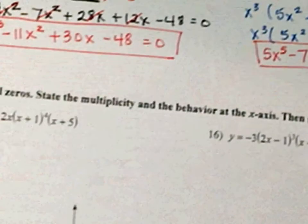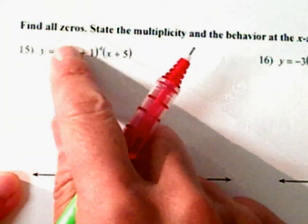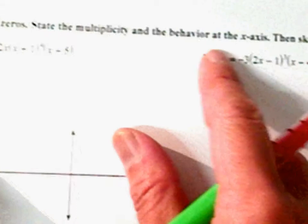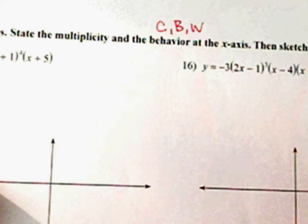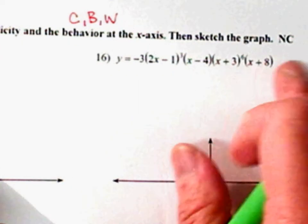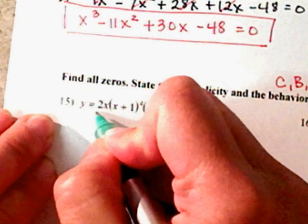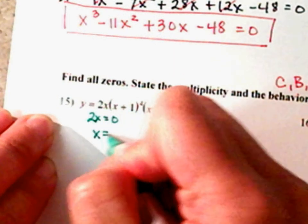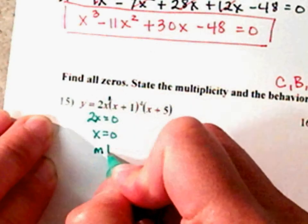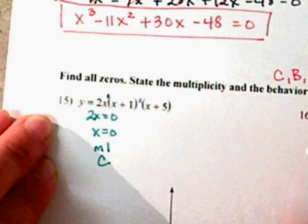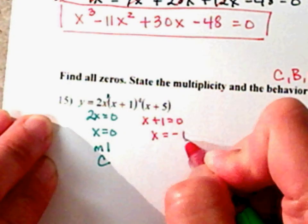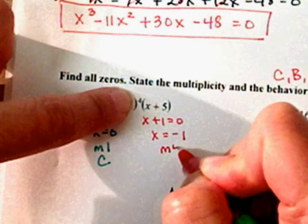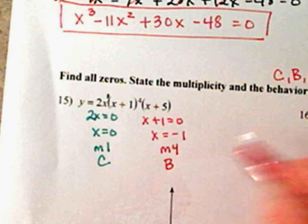Number 15 says: find all the zeros, state the multiplicity and the behavior at the x-axis — whether it's a cross, a bounce, or a wave — then sketch the graph with no calculator. Setting the first factor equal to zero: x equals 0, multiplicity is 1 (the exponent), and it's going to cross. Next: x plus 1 equals zero, so x equals negative 1, multiplicity is 4. Since 4 is even, this is going to be a bounce — a flatter bounce.